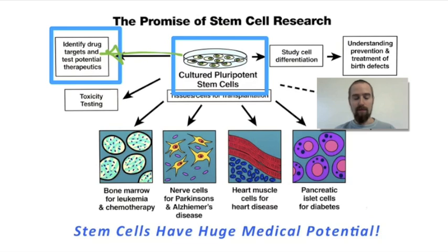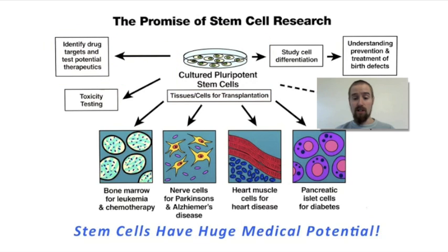Suppose, for example, that we develop a new drug that is meant to treat and heal the liver. If we could control the differentiation of stem cells in the lab, we could force a culture of stem cells to differentiate into liver cells, then test that new medicine on these liver cells in order to determine its effects. Likewise, we could test the toxicity of poisonous substances on these lab-grown cells in order to determine the effects of this toxin on different cells in the body.